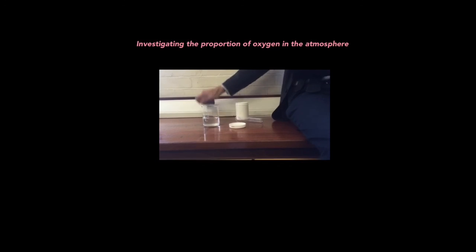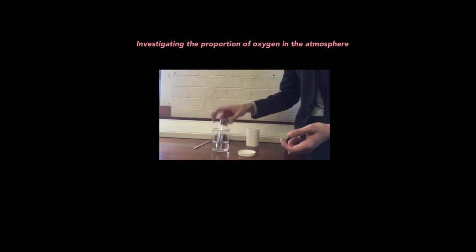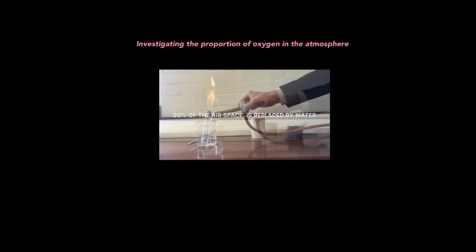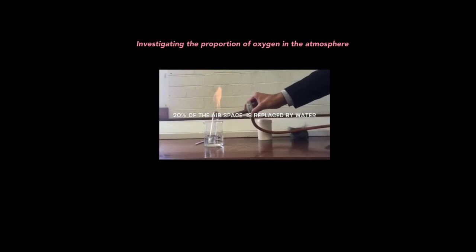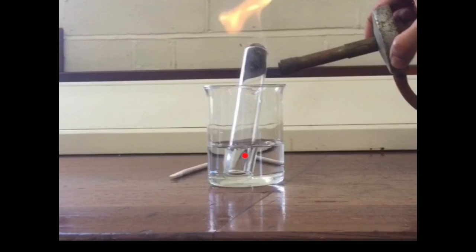So, you take some water, you get some iron wool, and put it in a boiling tube and turn it upside down. You then heat the iron using a Bunsen burner, and the iron, being a very oxygen-hungry metal, will react with oxygen, and the water level will rise. The water level rises to replace the oxygen, which is reacted with the iron, in the boiling tube.